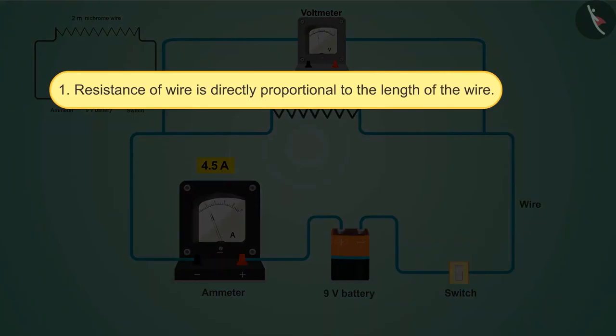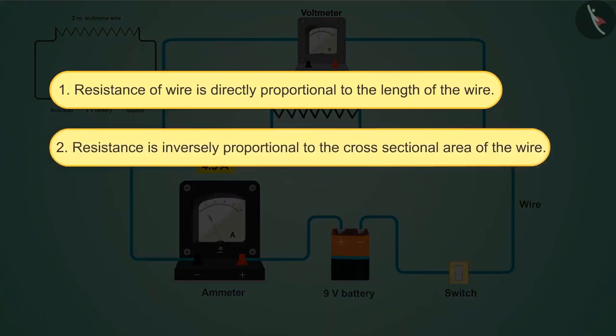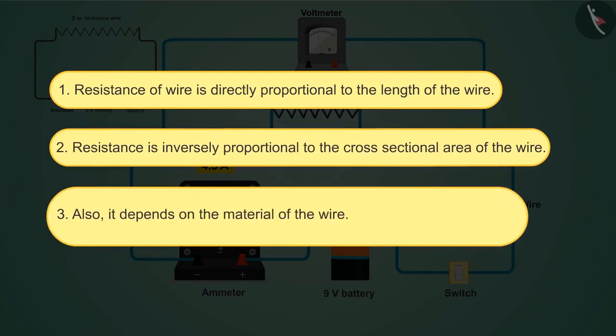We can conclude from this activity: one, resistance of a wire is directly proportional to the length of the wire; two, resistance is inversely proportional to the cross-sectional area of the wire; three, it also depends on the material of the wire, which we have already understood in our last video.